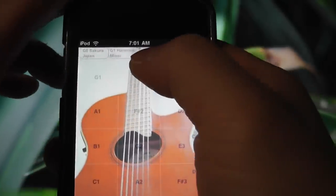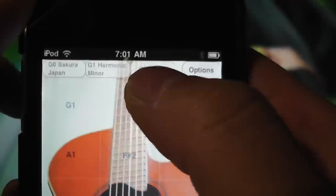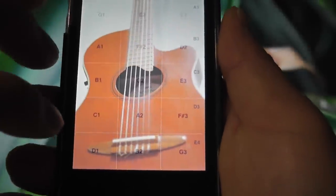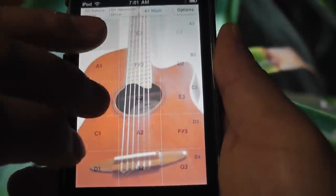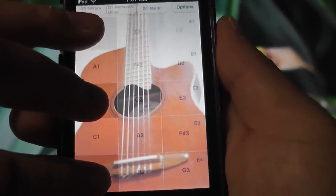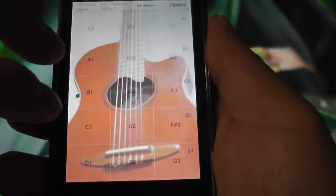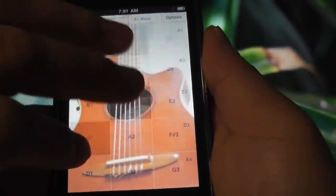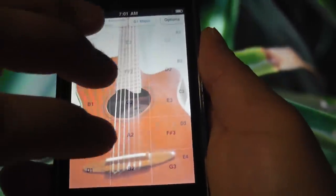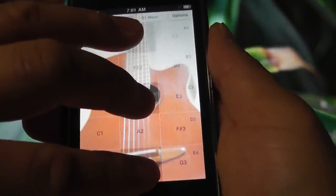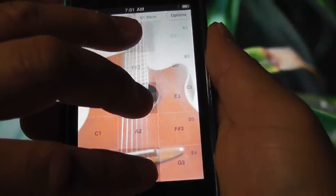So G major scale will give you the following 7 chords: a major chord, 2 minor chords, 2 major chords, a minor chord, and a very rare minor flat 5 chord.